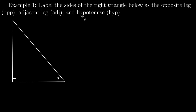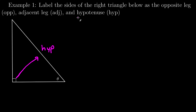I always like to start with the hypotenuse, so I go across from the right angle, and over here this is the hypotenuse. For the opposite leg, I start at my angle, go across the triangle, and this side here is the opposite leg.